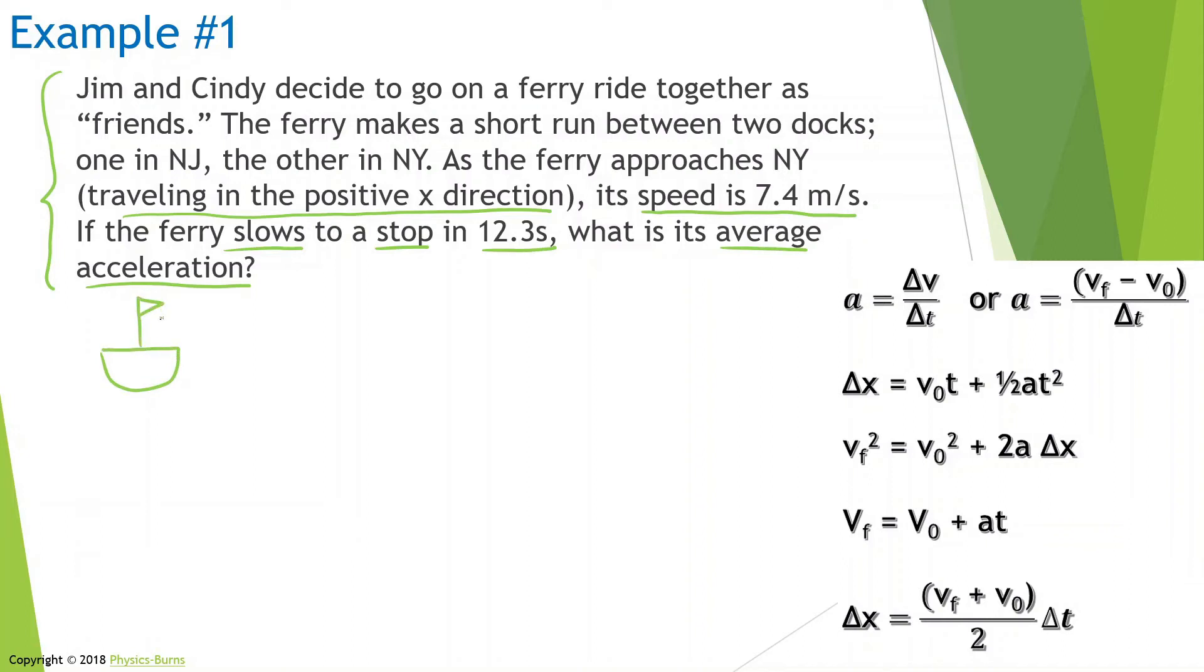We have the ferry here, and the ferry is moving 7.4 meters per second. Then it's going to dock in New York. I'm going to draw something like this—it's docking here. You don't really have to draw these; they could be blocks if you want, whatever you want. Now let's write some things down. We know the speed is equal to 7.4 meters per second. We know how long it's going to take the boat to get from here to the other side—that's a time of 12.3 seconds.